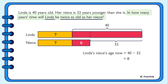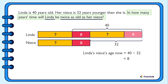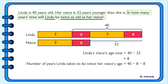Since Linda would then be twice as old as her niece, we can also represent Linda's age by 2 of these. When we put 8 and 8 together with the orange part, we get a total of 40. If you thought of subtracting 8 and 8 from 40, great job! 40 minus 8 is 32, and 32 minus 8 is 24. This means that Linda will be twice as old as her niece in 24 years time.